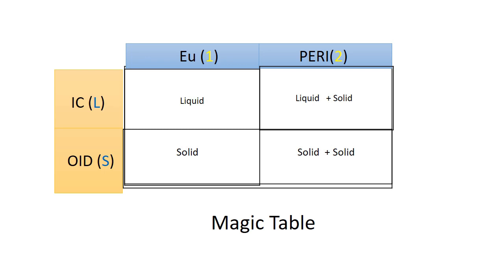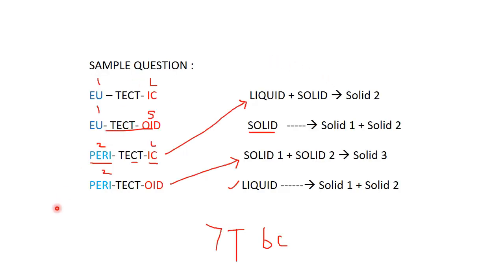I will now show a sample match-the-following question where this table makes it easy to identify each reaction. Using the table: eutectic has a 'U' sound — one phase — completing with 'ic' means liquid, so the left-hand side is simply liquid. Eutectoid has 'U' — one phase — completing with 'oid' means solid. Peritectic has 'peri' — two phases — with 'ic' meaning one is definitely liquid, so it is liquid plus solid.